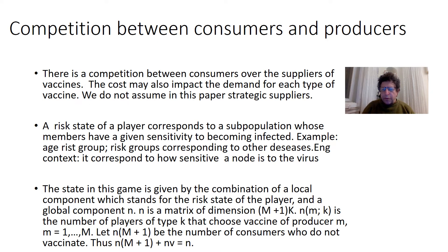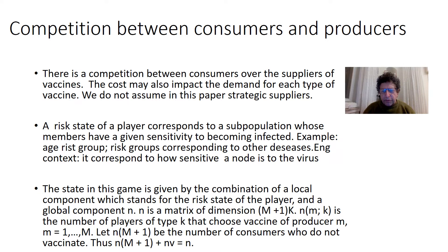In this paper, we allow for both competition between consumers as well as between producers. There is competition between consumers over the suppliers of vaccines, and each supplier may fix its costs. The costs may also impact the demand for each type of vaccine, so we assume several types of vaccines. We do not assume strategic suppliers here — we will focus on the consumers.